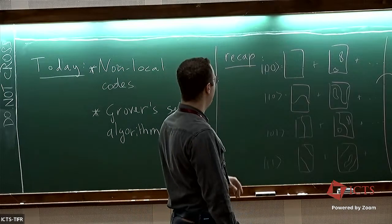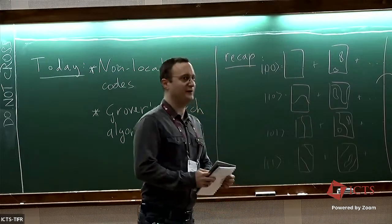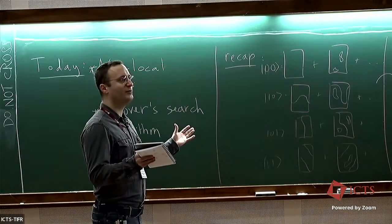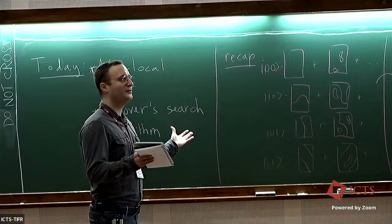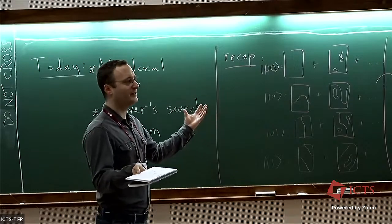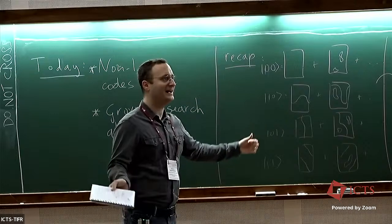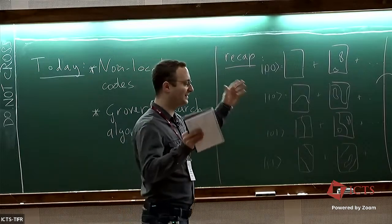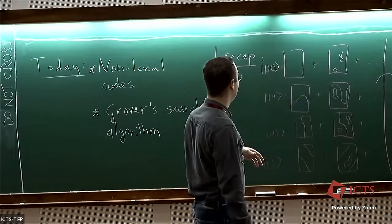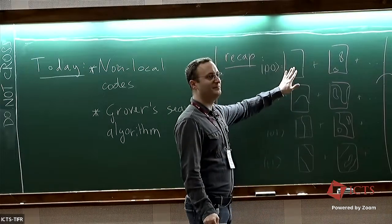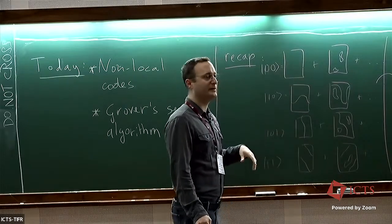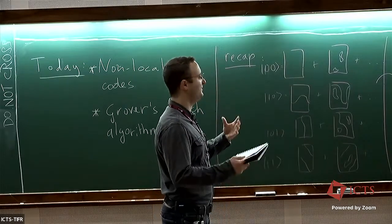Let's start with a recap of what we learned yesterday. We discussed quantum error correcting codes on a surface. The surface can be closed — it can be a torus — or it can have many handles, or it can be flat with open boundary conditions. The details will change but not the essentials.